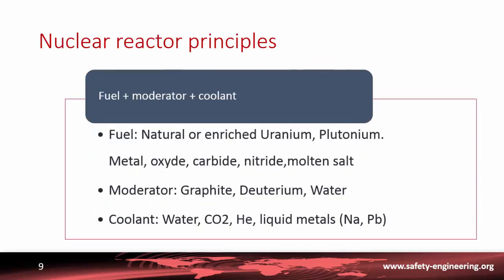For a nuclear reactor to operate, there need to be three main components: the fuel, where the fission reaction will occur; then a moderator, because the neutrons emitted by the fission reaction have too high a speed to be able to produce another fission reaction and so they need to be slowed down; and the third element is the coolant, because the quantity of energy produced by the fission reaction needs to be extracted and used afterwards. These three components are essential.